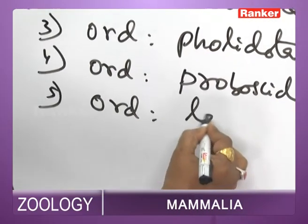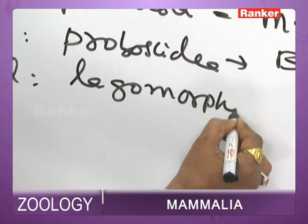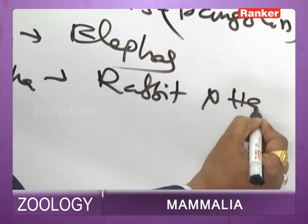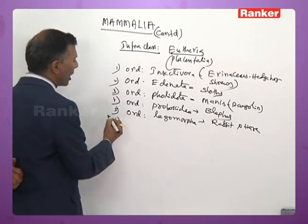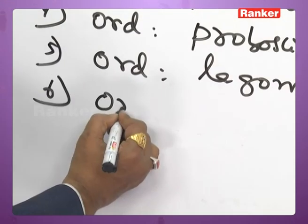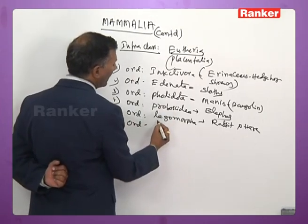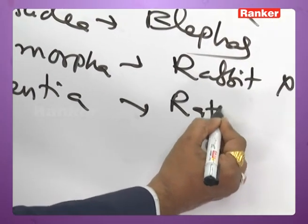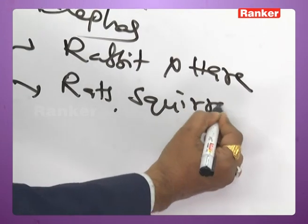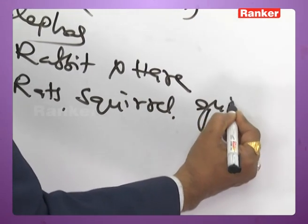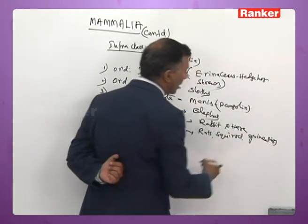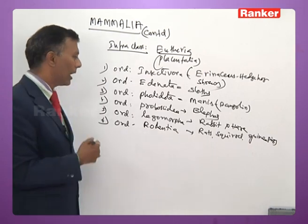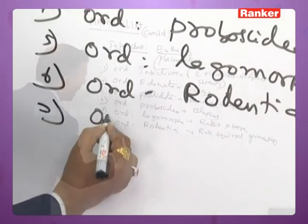Order Lagomorpha — includes rabbits and hares. Order Rodentia — includes rats (Rattus rattus), squirrel (Funambulus), and guinea pigs.